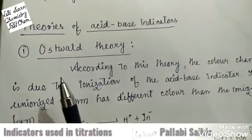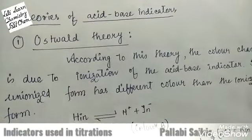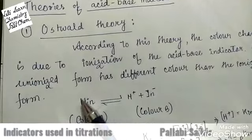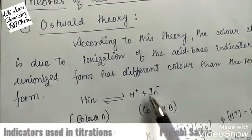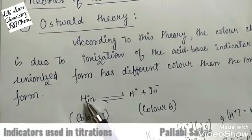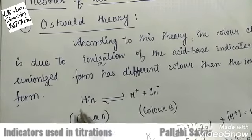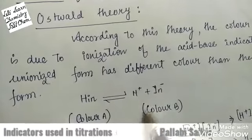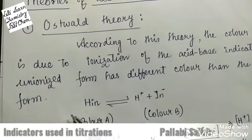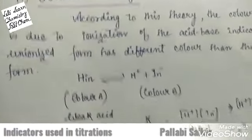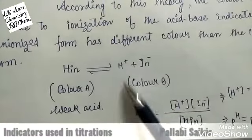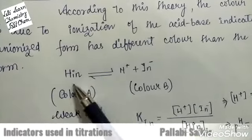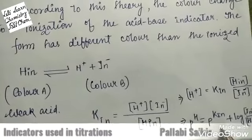Two theories exist for acid-base indicators. Number one is Ostwald theory. According to this theory, the color change is due to the ionization of the acid-base indicator. When the indicator is ionized it has a different color, and when it is unionized it has a different color. When HIn is present it is color A; when it ionizes to H⁺ and In⁻ it is color B. The indicator may be a weak acid or a weak base. From the law of mass action, the indicator constant equals the concentration of H⁺ times In⁻ divided by the concentration of HIn.